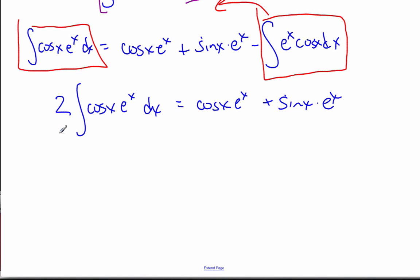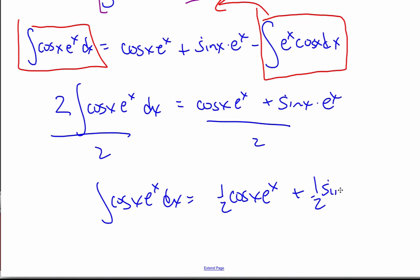And then I'm going to just divide everything by two. And so the integral of cosine x e to the x is equal to one half cosine x e to the x plus one half sine x times e to the x plus c.